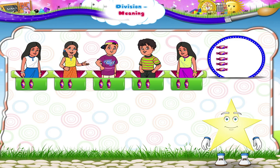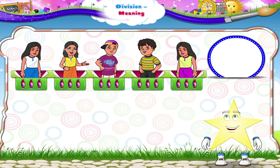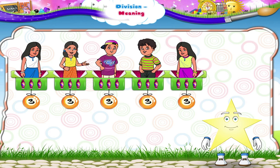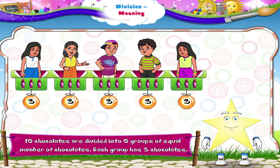So let's distribute these also: 1, 2, 3, 4, 5. Hey Stari, see all the chocolates are over. How many chocolates are there in each group? Yes, 3 chocolates. So each of my friends will get 3 chocolates.